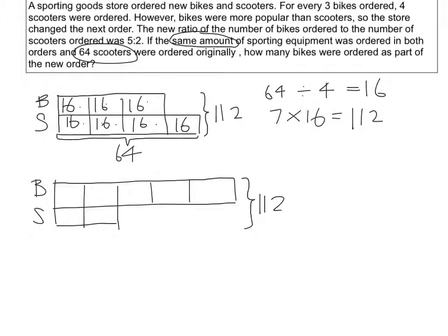And this 112 represents this 1, 2, 3, 4, 5, 6, 7 boxes in a new order. So we take 112 divided by 7, which gives us 16.